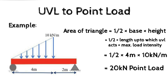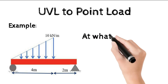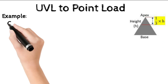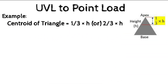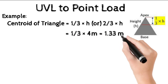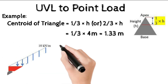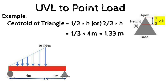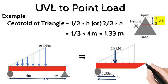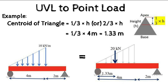Now the question is at what position this 20 kilonewton point load acts. We use the centroid concept again. For a triangle, the centroid is located at one third of its distance from the apex, or two thirds of its distance from the base. Here, one third of the length — which is 4 meters — gives 1.33 meters from the apex, that is from the zero intensity end. So finally, the 20 kilonewton point load acts at 1.33 meters from the apex of the triangular load.